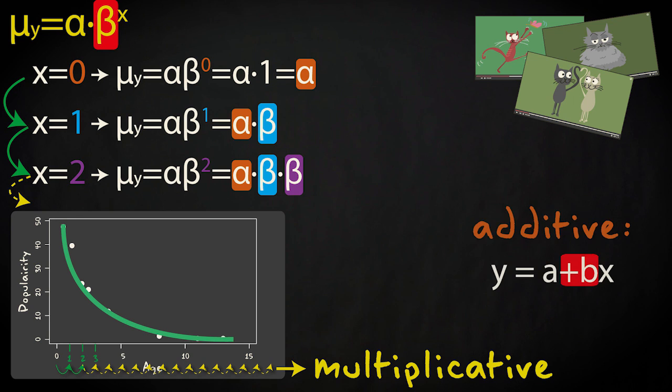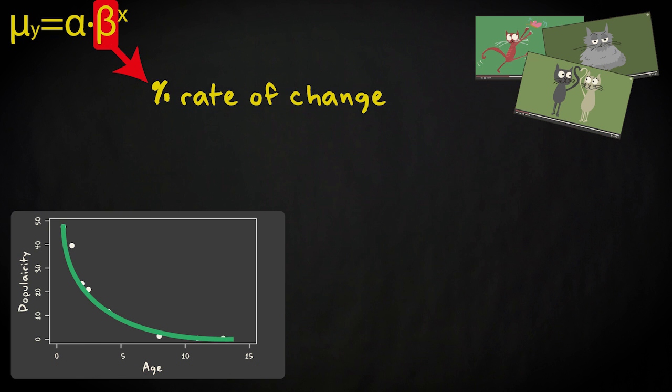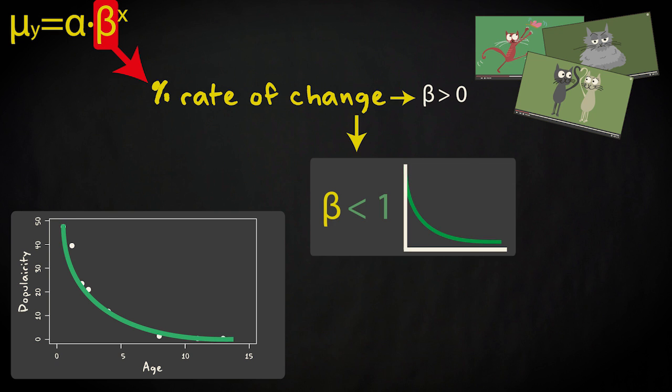This is different from the additive linear model, where the predicted value always increases by the exact same amount. So in an exponential model, the regression coefficient β indicates the percentage rate of change. β is larger than zero by necessity. If β is smaller than one, the exponential curve will descend. As x increases, the predicted value will decrease.